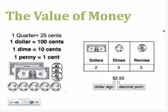Another important thing to consider is how to represent the value of money in terms of dollars and coins. In this example, if we had two dollar bills, five dimes, and three pennies, this would be represented with a dollar sign and decimal point and read two dollars and fifty-three cents. It's very important to say the word AND when reaching the decimal point to tell the listener that you are transitioning from dollars to coins.